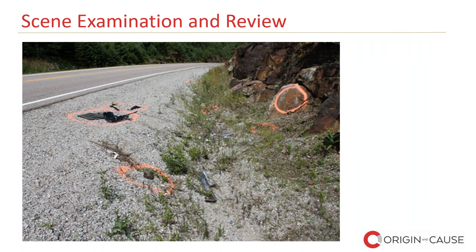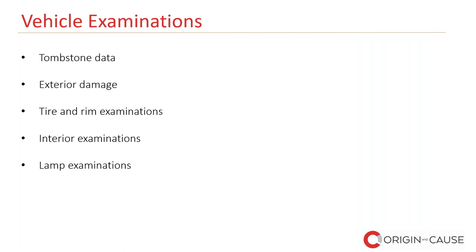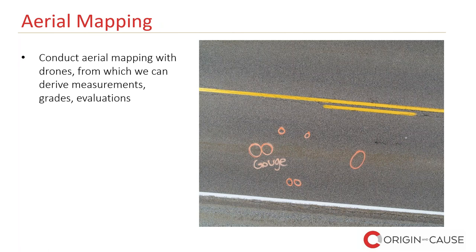Some of the things we do in vehicle examinations: we go over tombstone data — that's the basic make, model, VIN numbers. We document exterior damage, tire and rim examinations, interior examinations looking for evidence like blood on the ceiling, whether seatbelts were worn, and lamp examinations. With traditional halogen lights, we could tell if lights were activated at the time of collision — the filament would heat up, and the melt of the collision would cause the filament to expand, which we could physically examine in the light.